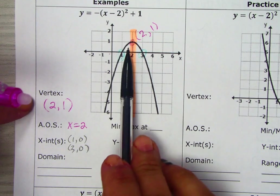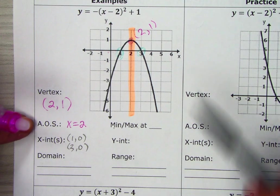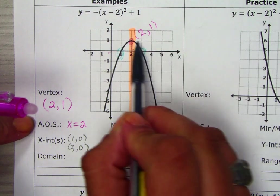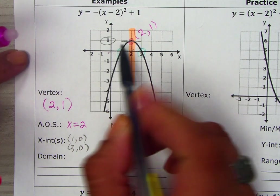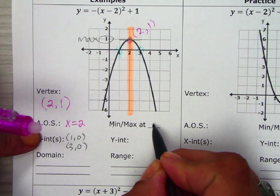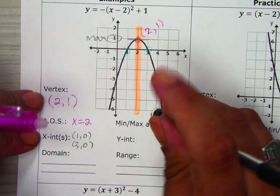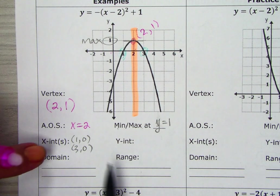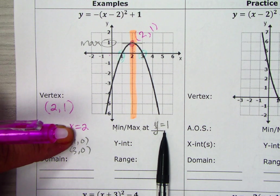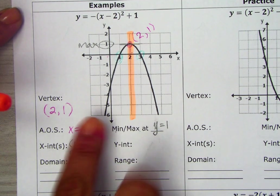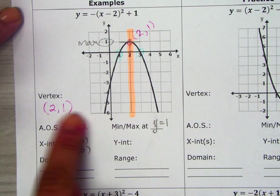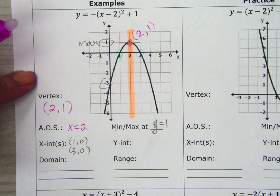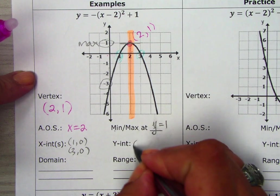When we look at the vertex, we need to identify it as minimum or maximum. Because the parabola is going up and then comes down, this will be your highest value — so 1 is the maximum. We're going to say maximum is at y equals 1. If you put the axis of symmetry and the minimum or maximum together, they create that vertex. For the y-intercept, we have negative 3 being touched on the y-axis, so we write (0, -3).